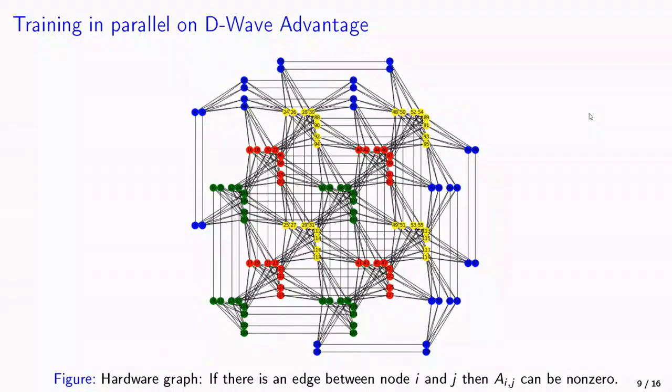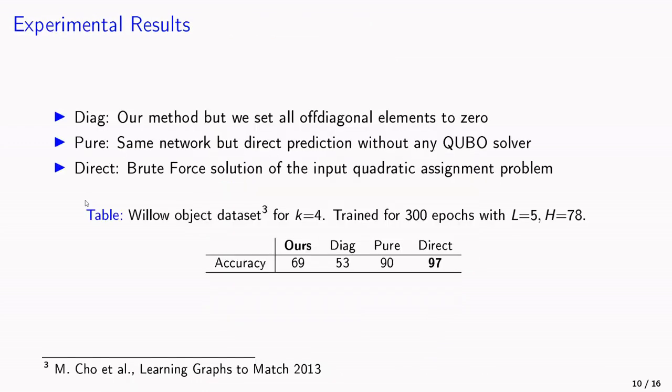We performed the training on D-Wave Advantage. Here in this figure, we see the hardware graph. And the hardware graph basically means that if there's an edge between node i and j, then this means that for some A_ij in this QUBO matrix, there can be a non-zero entry. And the colors here depict that we can compute many problems in parallel as we have chosen the embedding.